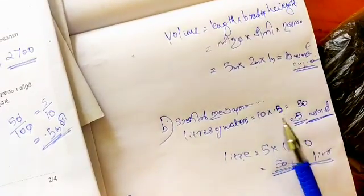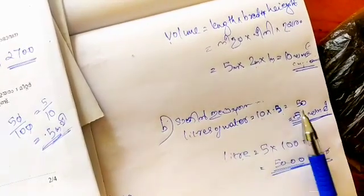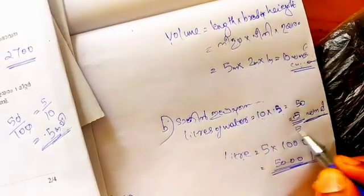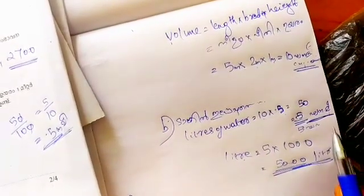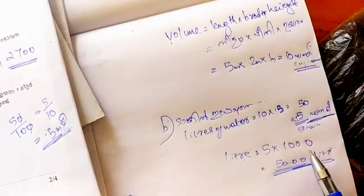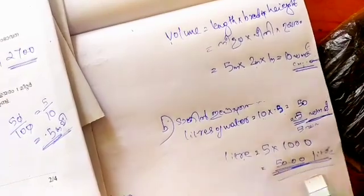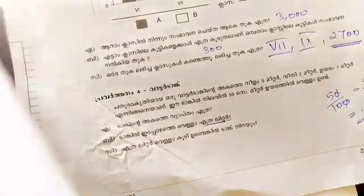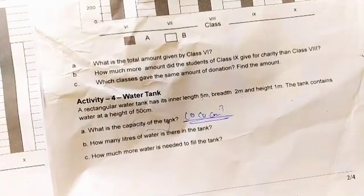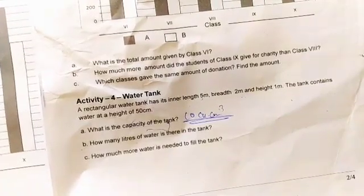The water height is 0.5 meters, and the dimensions give us a volume of 5 cubic meters, which equals 5,000 liters of water currently in the tank.